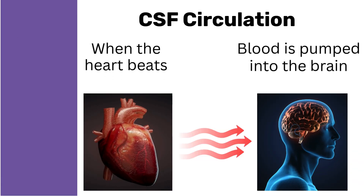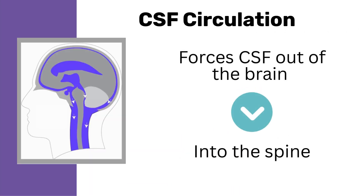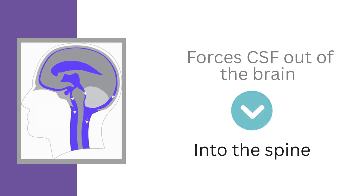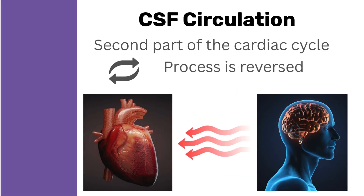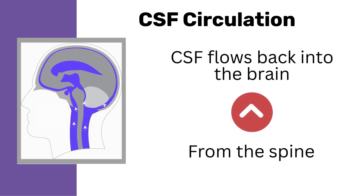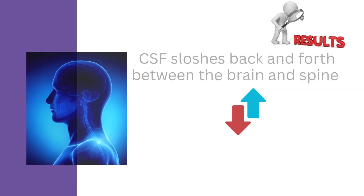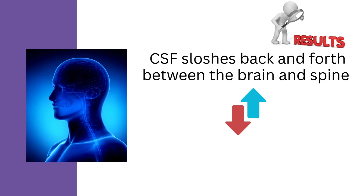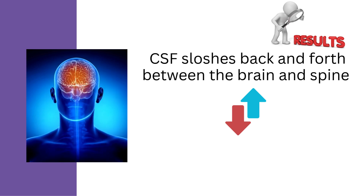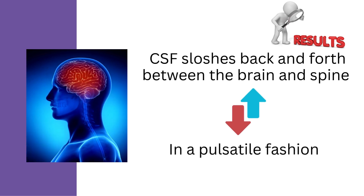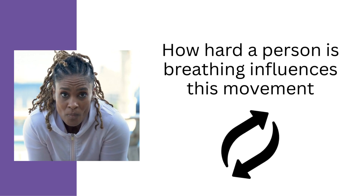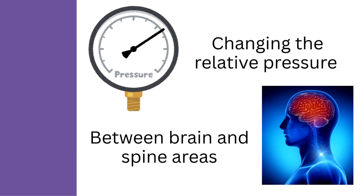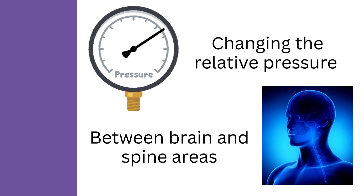When the heart beats, blood is pumped into the brain, which in turn forces CSF out of the brain and into the spine. During the second part of the cardiac cycle, this process is reversed and CSF flows back into the brain from the spine. The end result is that CSF essentially sloshes back and forth between the brain and spine in a pulsatile fashion. How hard a person is breathing influences this movement by changing the relative pressure between the brain and spine areas.